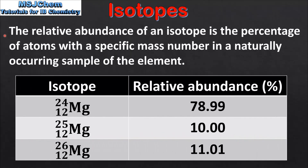We will end the video by looking at relative abundance, which is defined as the percentage of atoms with a specific mass number in a naturally occurring sample of the element. In this table we have the three naturally occurring isotopes of magnesium: magnesium-24, magnesium-25 and magnesium-26. The relative abundances are 78.99%, 10% and 11.01% respectively. The relative atomic mass of magnesium is 24.31. Note that this value is closer to 24 because this isotope has the highest relative abundance.